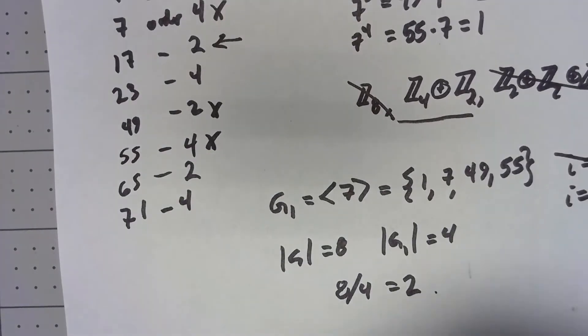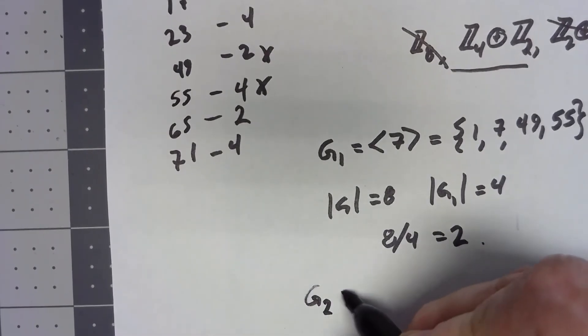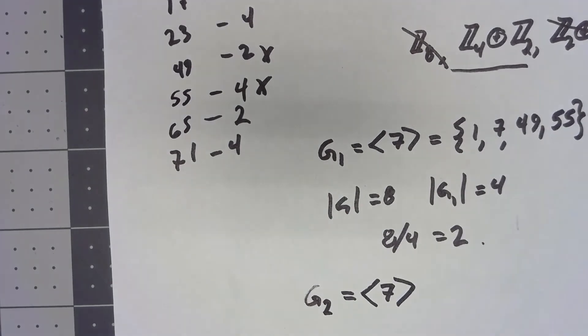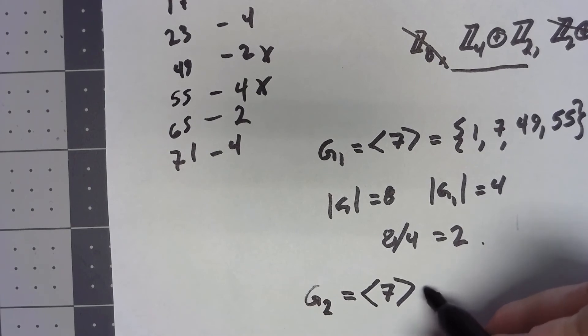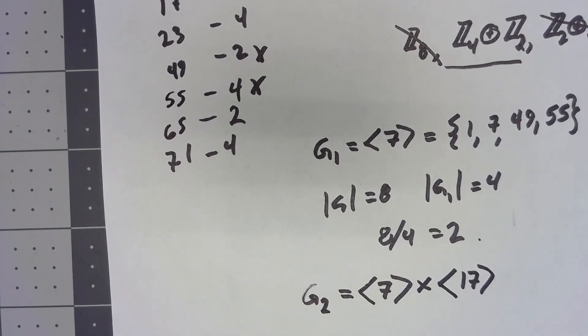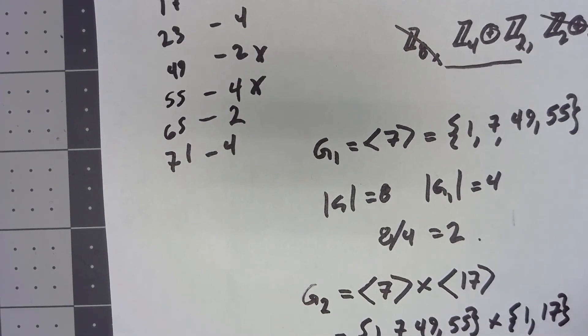So the next step is that G2, sort of my next iteration of this process, is that G2 is equal to what I had before, the cyclic subgroup generated by 7, inner direct product with cyclic subgroup generated by 17. Or in other words, what I've got is 1, 7, 49, 55, inner direct product with 1, 17.